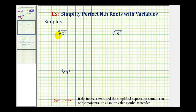For this first example, we have a cube root, so the index is three. For the second example, we have a square root, so the index is two. And for the third example, we have a fifth root, so the index is five.